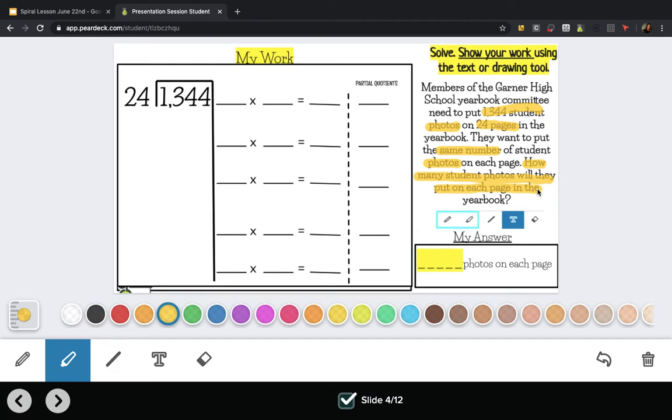So you can think of this as 24 pages times blank gets you to 1,344, or 1,344 photos divided into 24 pages equals blank.